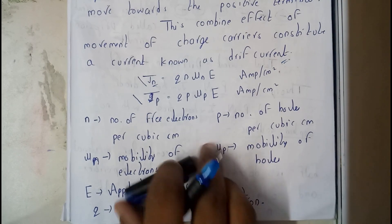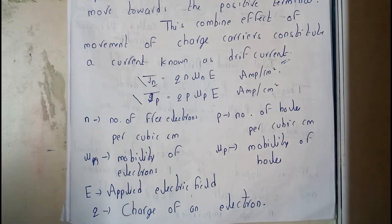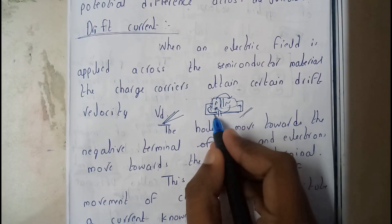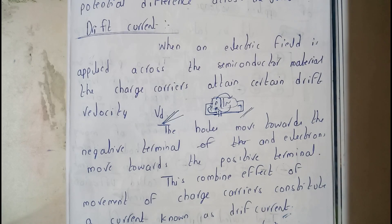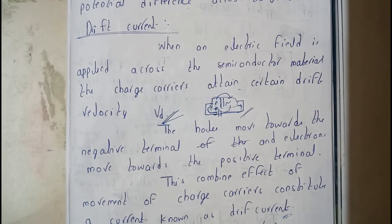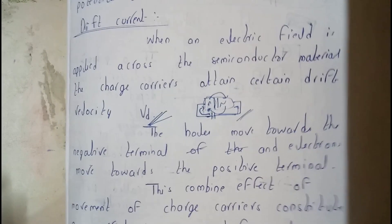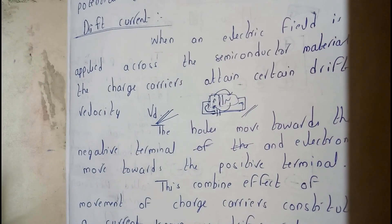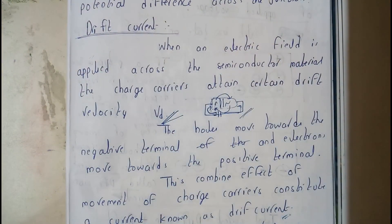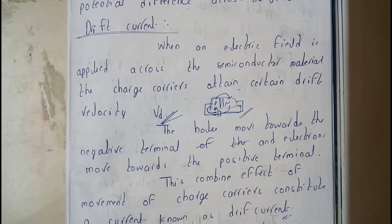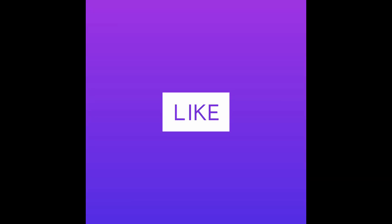Now I hope everyone is 100% clear with both topics of diffusion current and drift current. For the diagram, you can draw this with the supply and arrow marks. In the next tutorial, we will be going through P-N junction diode, its forward bias and reverse bias. Thank you for watching.